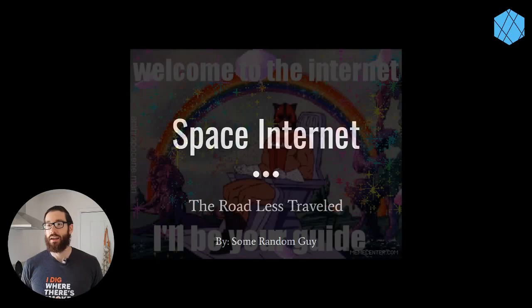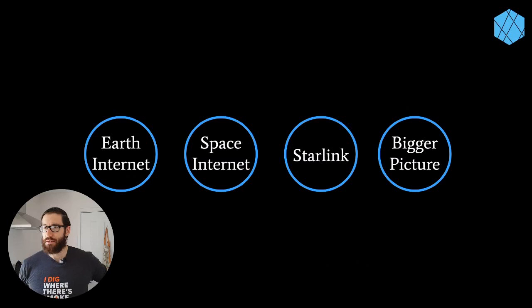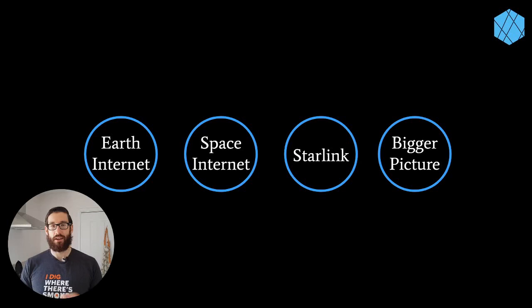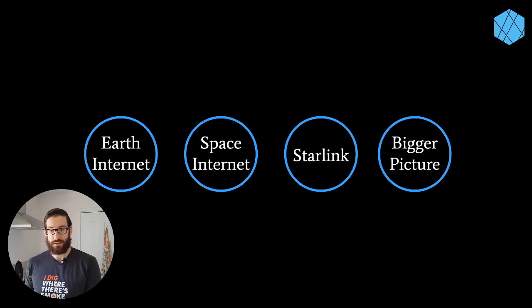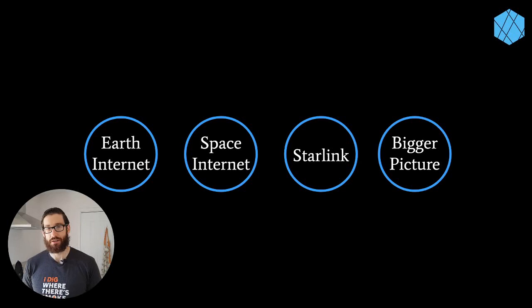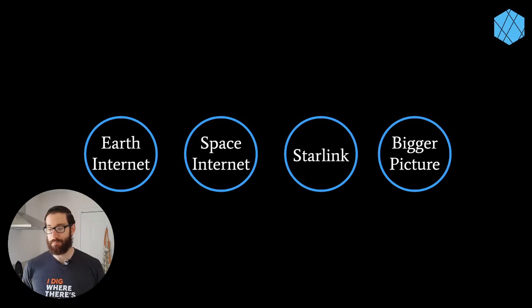We're talking about the internet and space, and I want to give you some broad brush strokes of what's happening. I'll go chronologically: first, internet on earth and its infrastructure - the physical stuff moving flashes of light around the planet. Then internet in space, what Starlink is doing and why it's potentially different, and finally the big picture context.